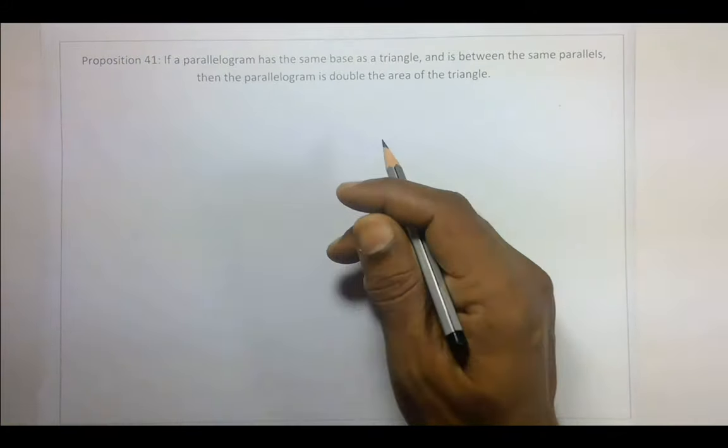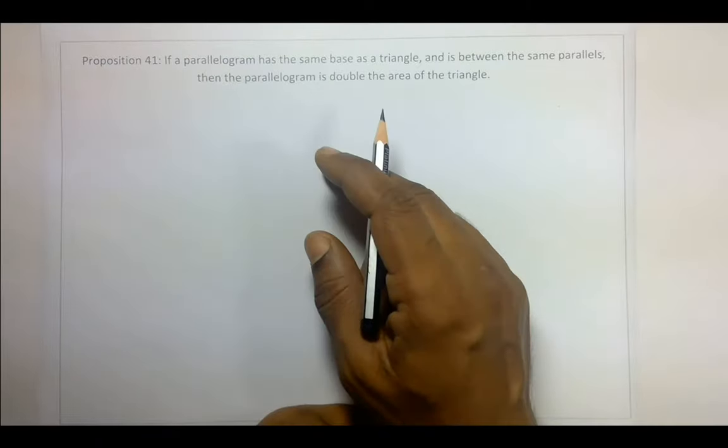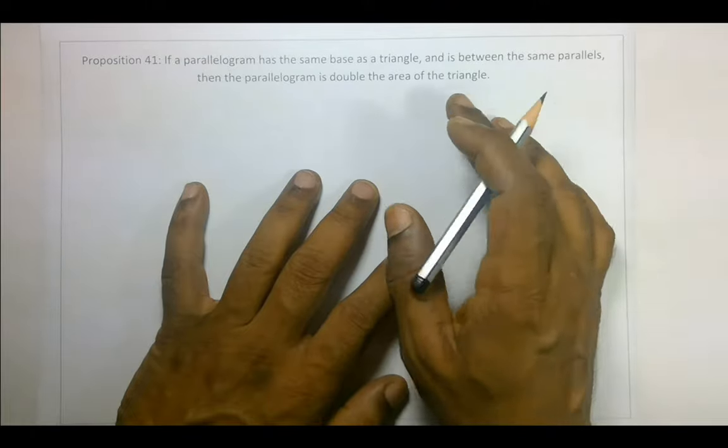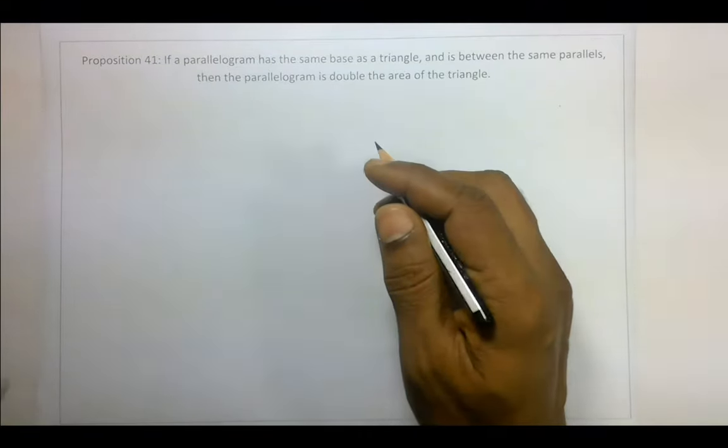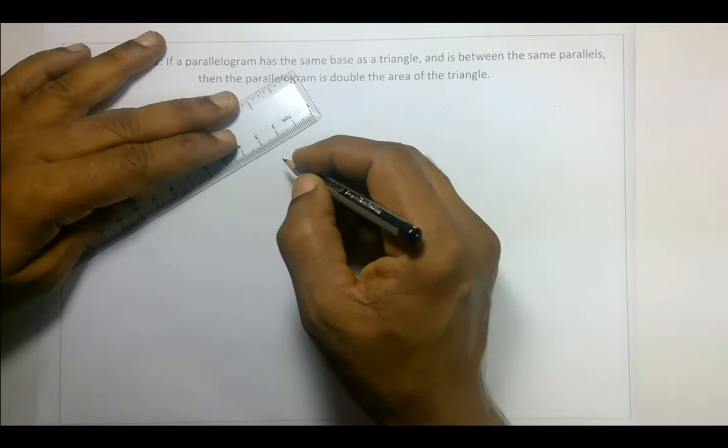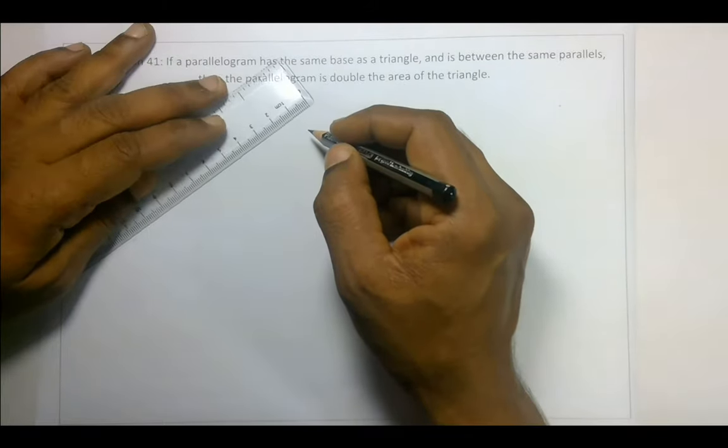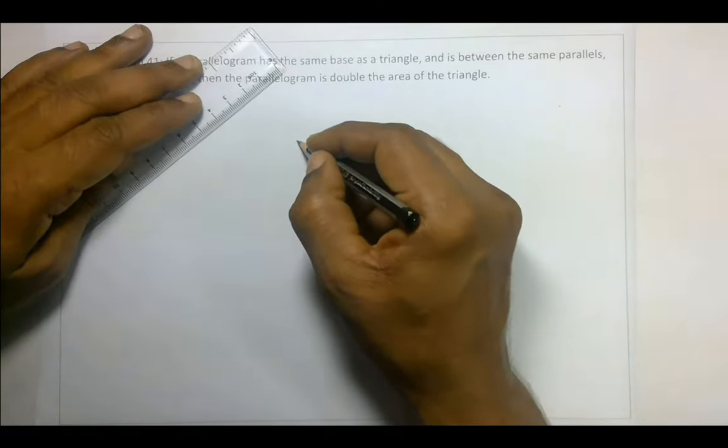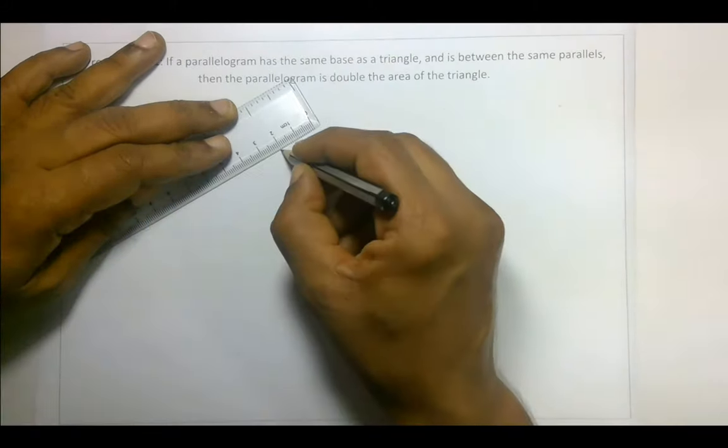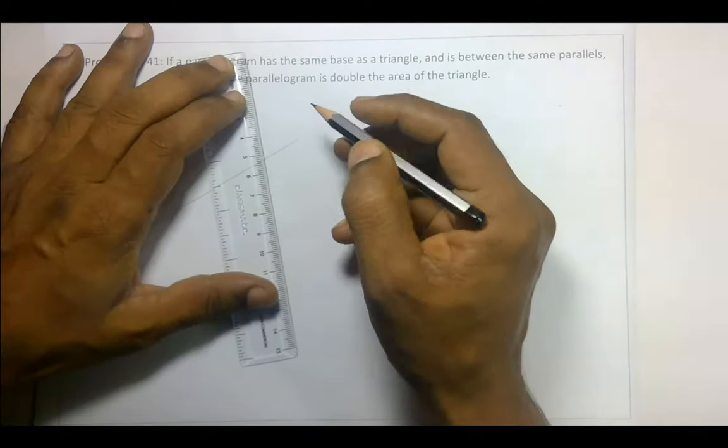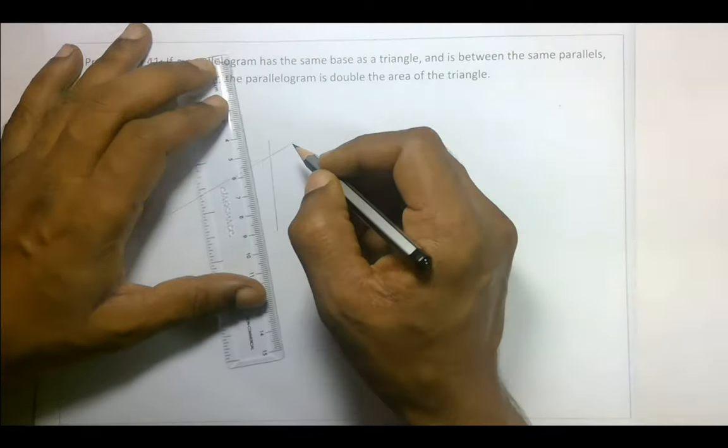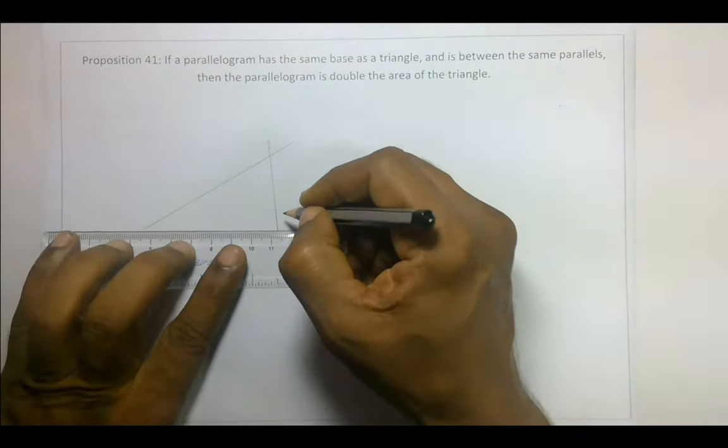Proposition 41: If a parallelogram has the same base as a triangle and is between the same parallels, then the parallelogram is double the area of the triangle. So let's see, we have a triangle, and we have a parallelogram on the same base.